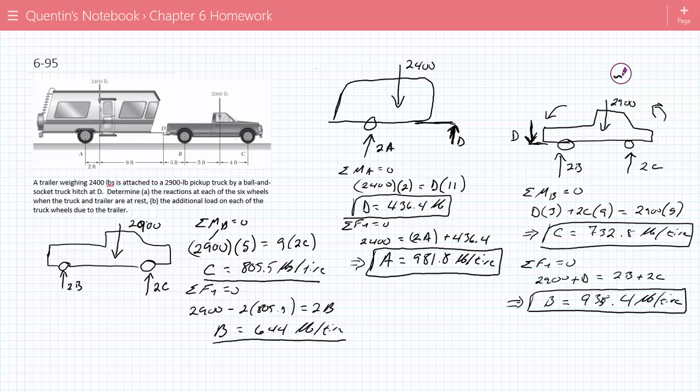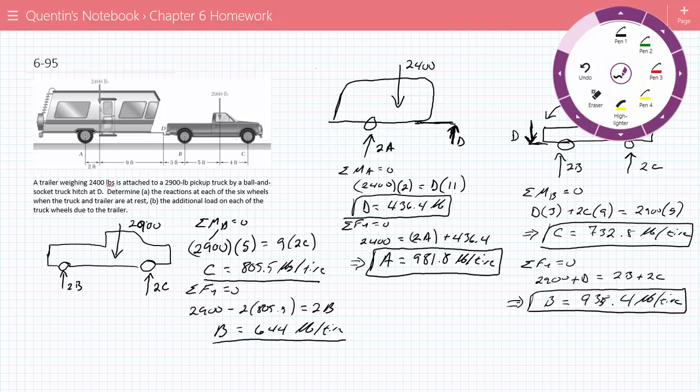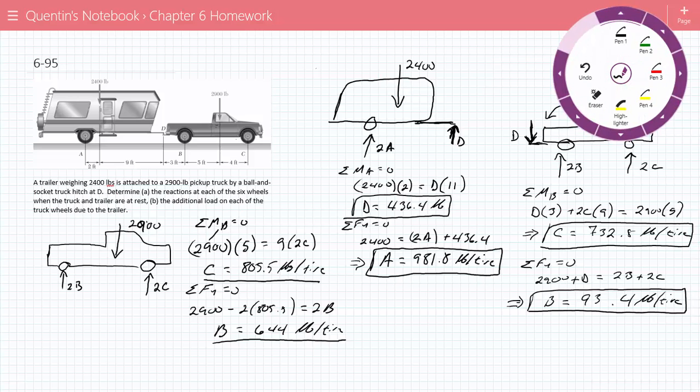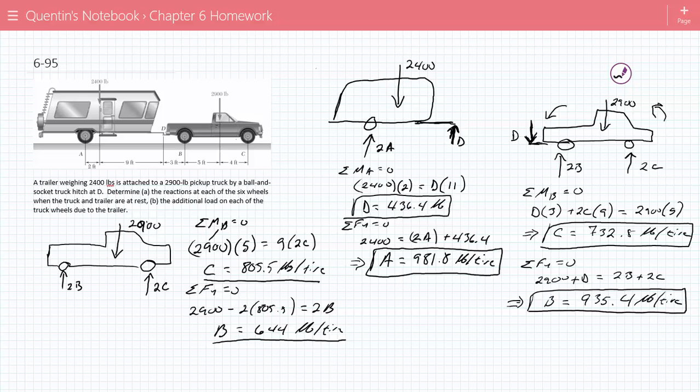Now, part B says the additional load on each of the truck tires. So, now we can just look at the difference. The difference between what the tires used to be. The back tires used to be 644, now they're 935. So, delta B is an increase of 291 pounds. And delta C is, it was 805, then it actually dropped to 732. So, it's actually a decrease of 72.5.